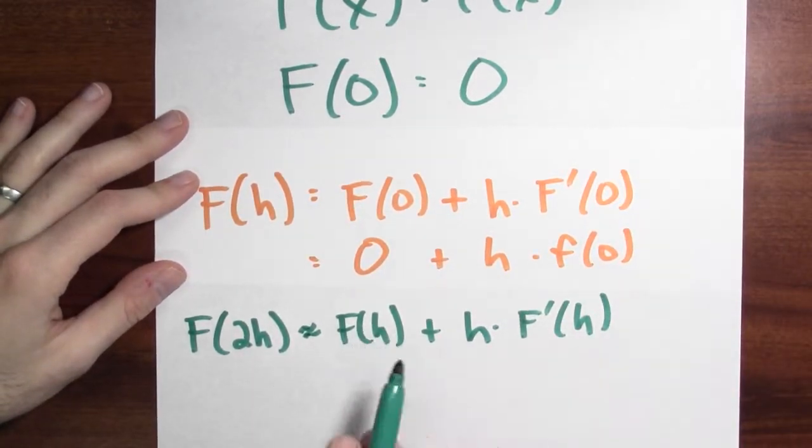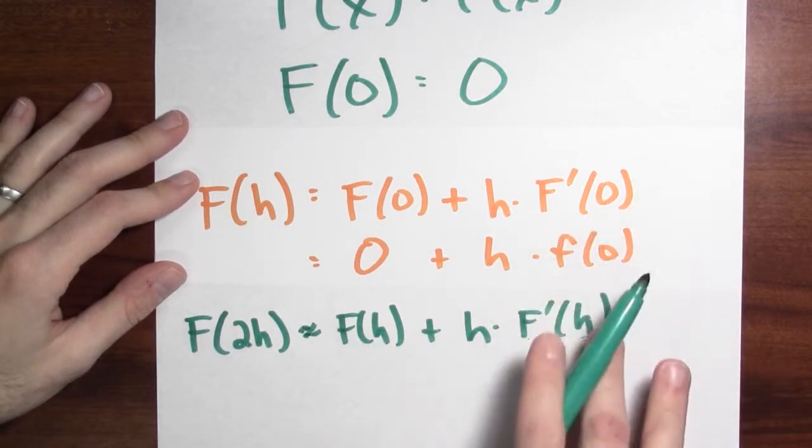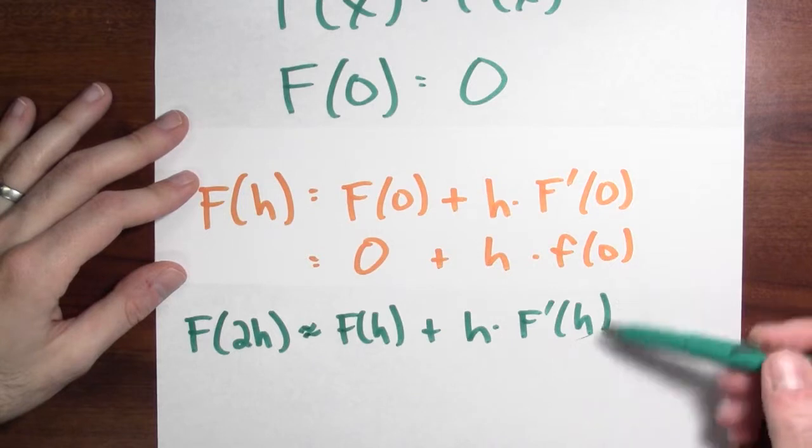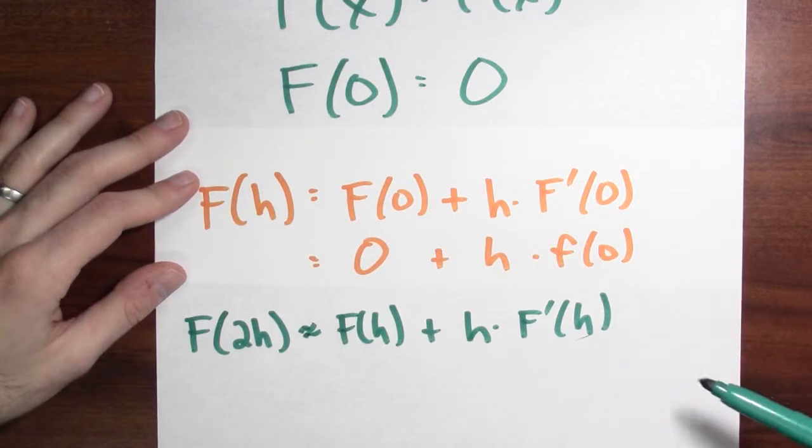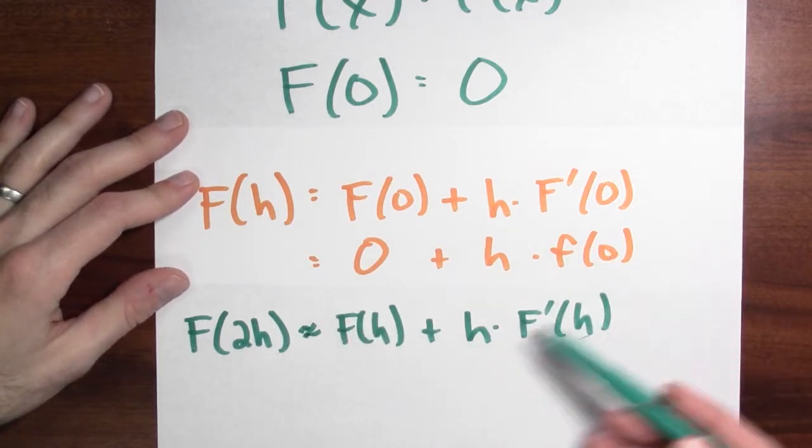I start at f of h, and I'm going to wiggle over by h, and the derivative is encoding, at least approximately, how much the output should change for a given input change. So this is what I get by doing another linear approximation.